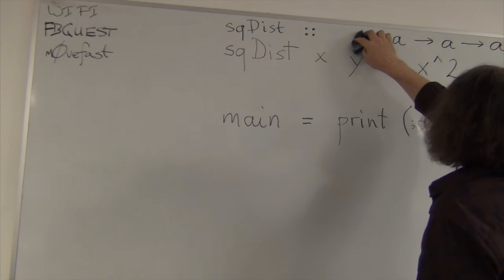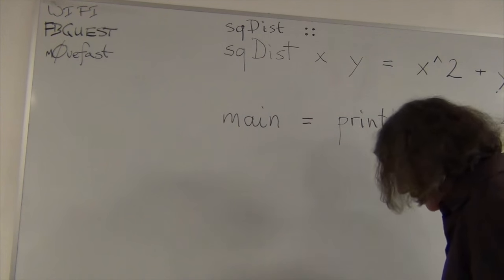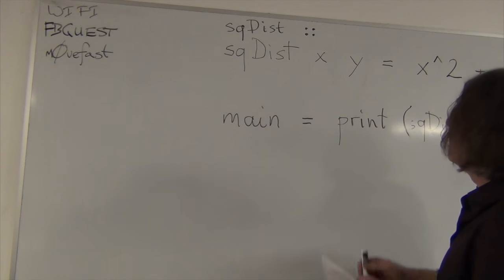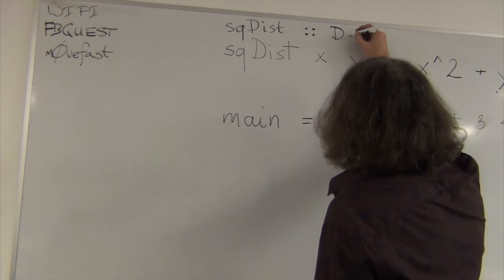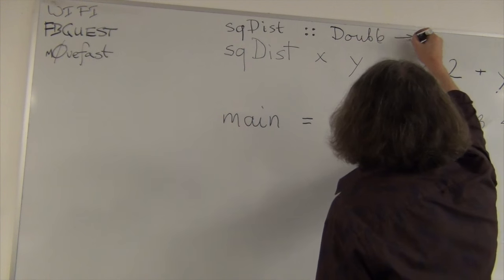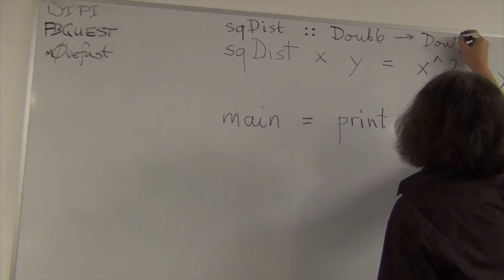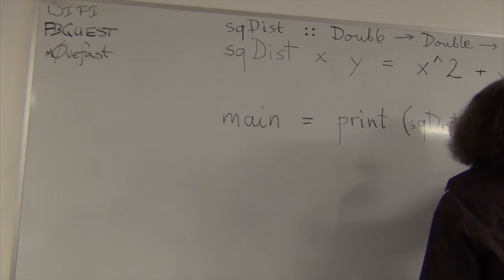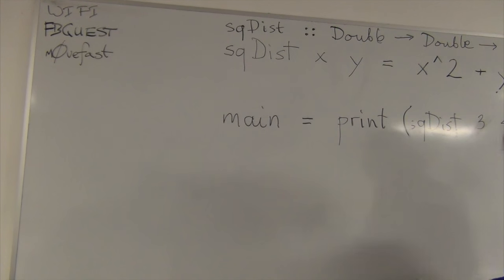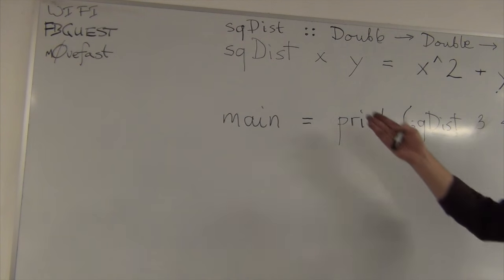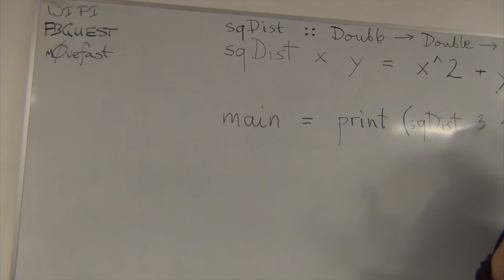Let's just tell the compiler, hey, we really are interested in doubles only, okay? Double, arrow, double, arrow, double, okay? Let's not complicate our lives with an arbitrary type, polymorphic. Because that would mean that squared disk is polymorphic. It can accept x and y as integers, ints, doubles, and so on. Right? So, you can edit the file. Yeah. This is where...